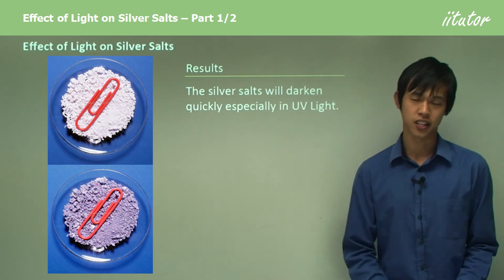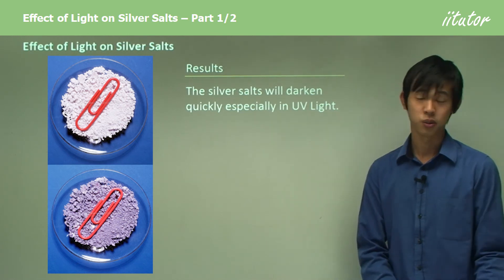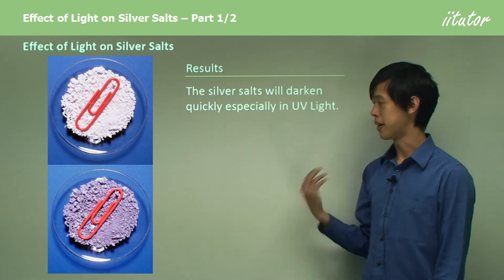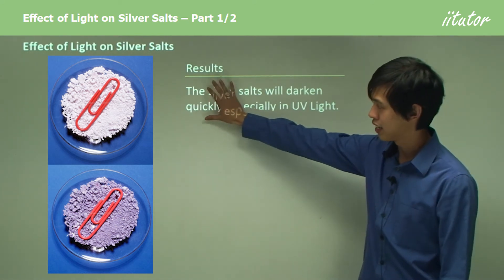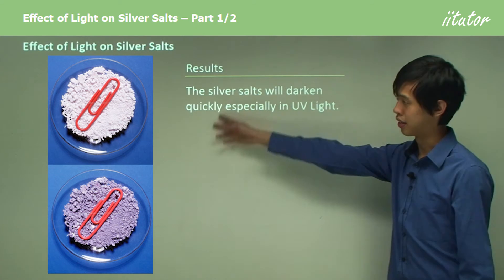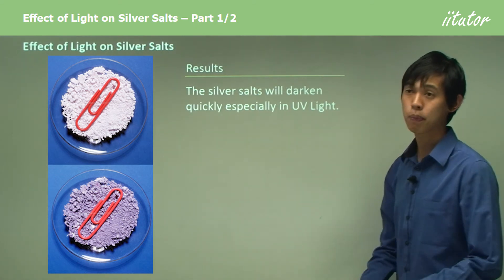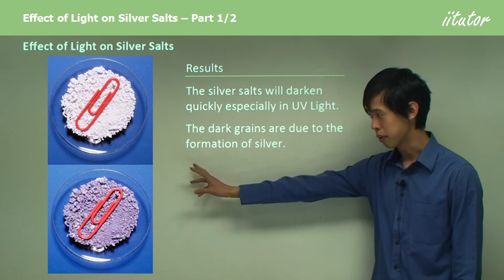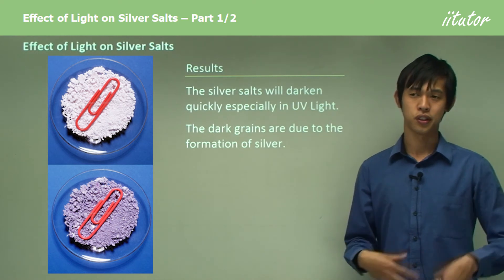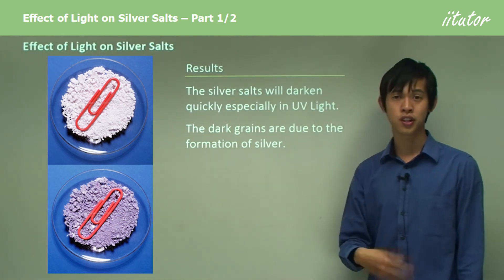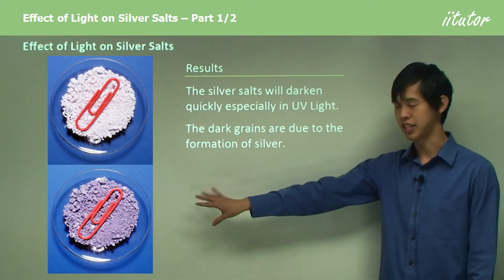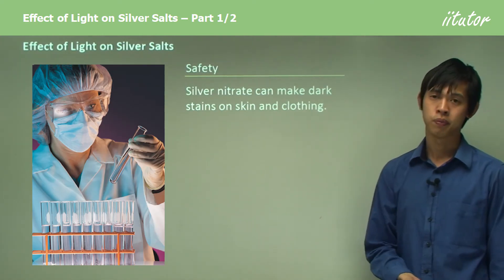Here are some typical results. The silver salts will darken quickly, especially under UV light — they can turn from white to purple first, and if left long enough, they'll turn black. This is what happens in photographic film: the dark grains are due to the formation of pure silver. When you expose silver chloride to light, you form pure silver crystals or grains, and that's the darkening you observe.